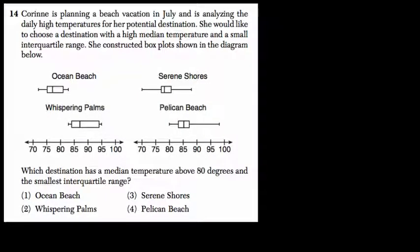Let's read this problem together. We've got a problem with box and whisker plots - that's these things right here. Corinne is planning a beach vacation in July and is analyzing the daily high temperatures. So I know that we're looking at high temperatures here for her potential destination. She would like to choose a destination with a high median temperature and a small interquartile range.